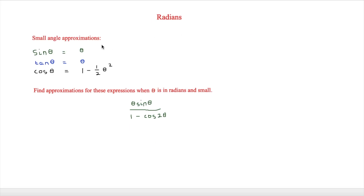The next topic is small angle approximations, and again this only works when angles are in radians. When the angle is small, we can say sine θ ≈ θ, tan θ ≈ θ, and the slightly more difficult one: cos θ ≈ 1 minus a half θ squared.